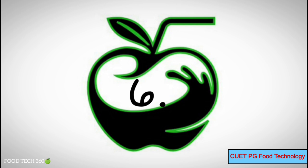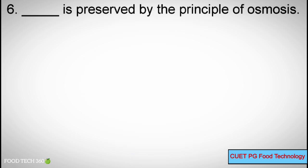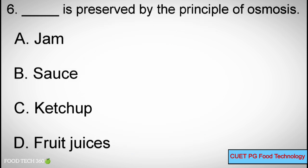Question number 6. Dash is preserved by the principle of osmosis. Options: A) jam, B) sauce, C) ketchup, D) fruit juices.